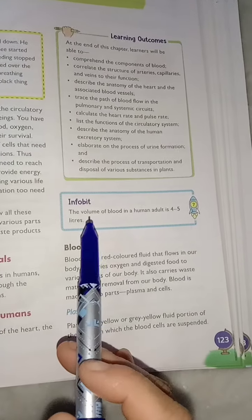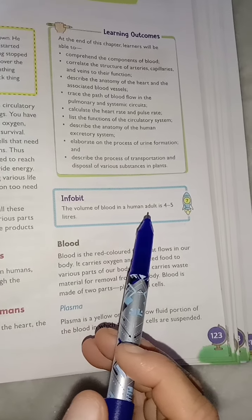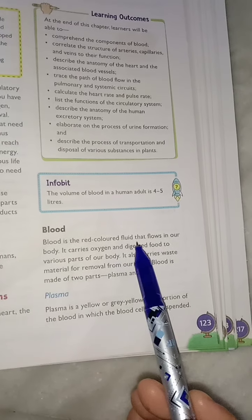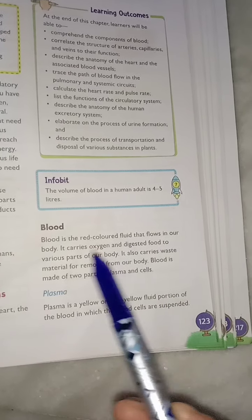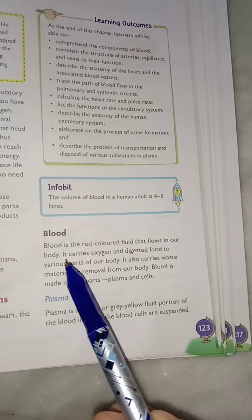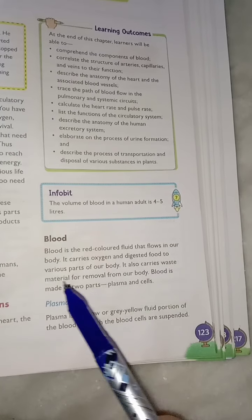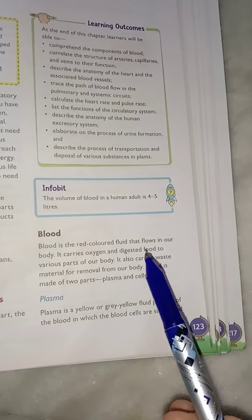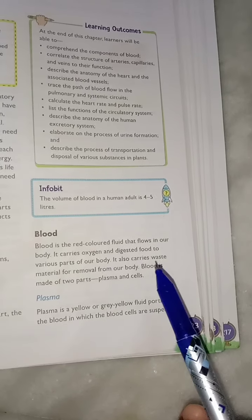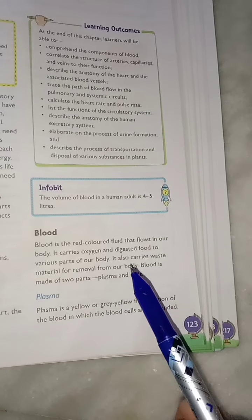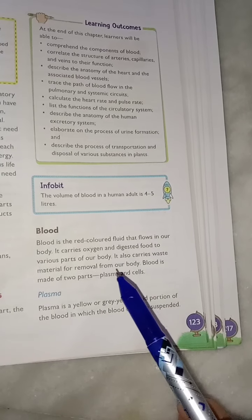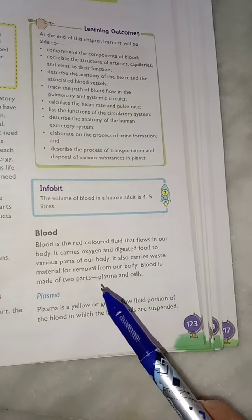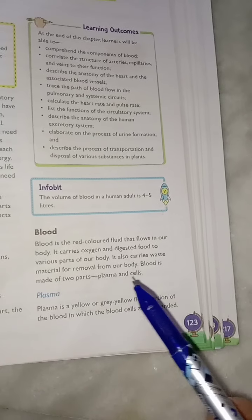The volume of blood in an adult human being is 4 to 5 litres. Blood is the red-coloured fluid that flows in our body. It carries oxygen and digested food to various parts of our body and also carries waste material for removal. Blood has mainly two parts: one is plasma and the second is cells.